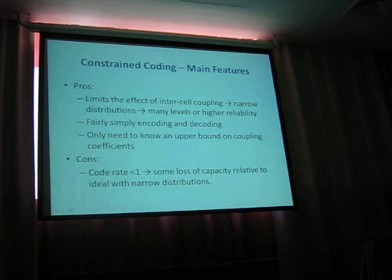We limit the effect of intercell coupling and narrow the distributions so we can have many levels. We use fairly simple encoding and we only need to know an upper bound on coupling coefficients. However, the code rate is below 1.